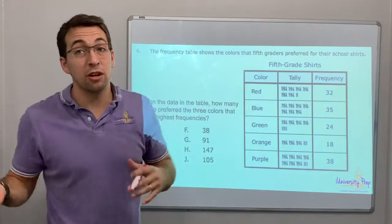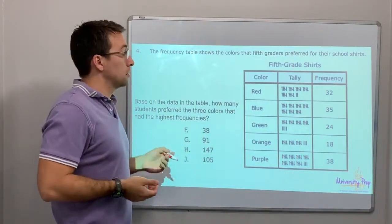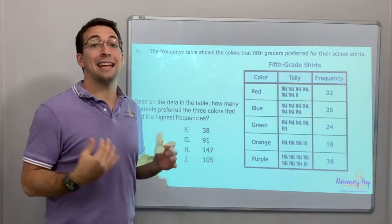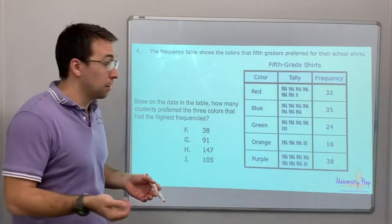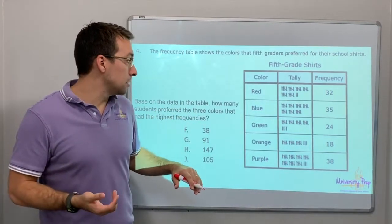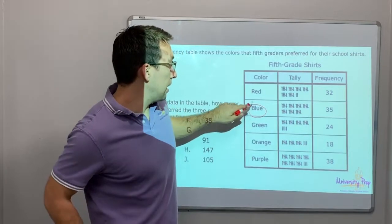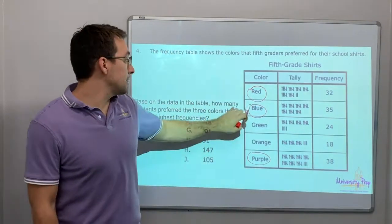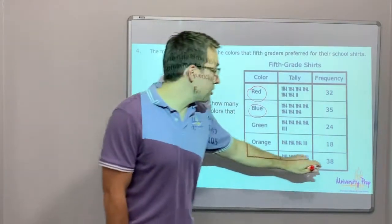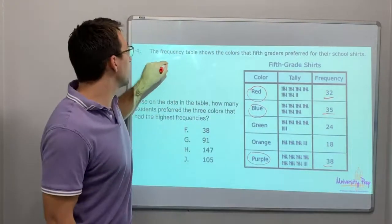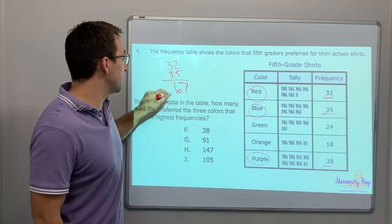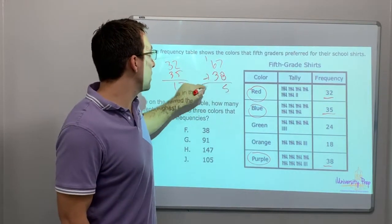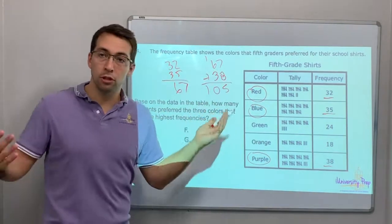The frequency table shows the colors that fifth graders prefer for their school shirts. Here's the colors and here's how many people voted. Based on the data on the table below, how many students preferred three colors that had the highest frequency? The three colors that had the highest frequencies. Here's the highest blue and then purple, then red. Those are the three. These are the highest numbers. So let's add them together. 32 plus 35 is 67. 67 plus 38. 7 plus 8 is 15. Carry the 1. 10. 105. J. Multiple step problems.